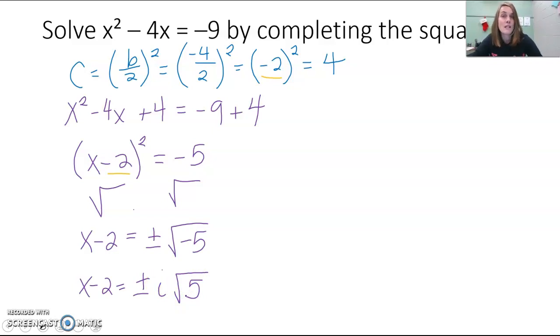Now remember, if 5 wasn't a perfect square, but you could simplify it, say it was 20, you would do your factor tree or you would come up with your perfect square factors and work through all of that. But for right now, 5, we just leave as it is. And then we're going to solve for x.